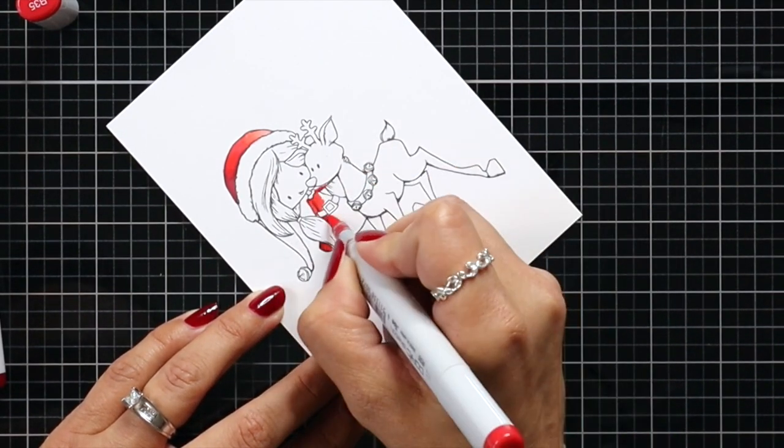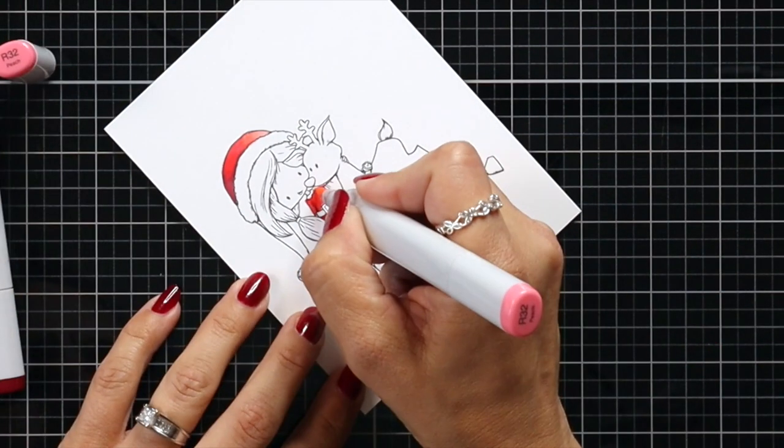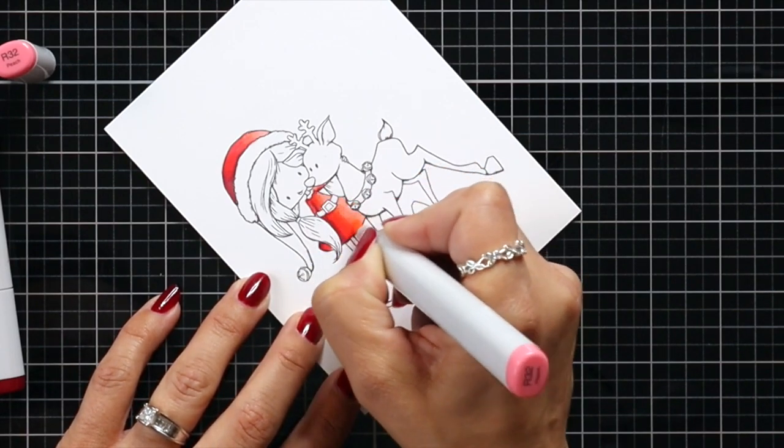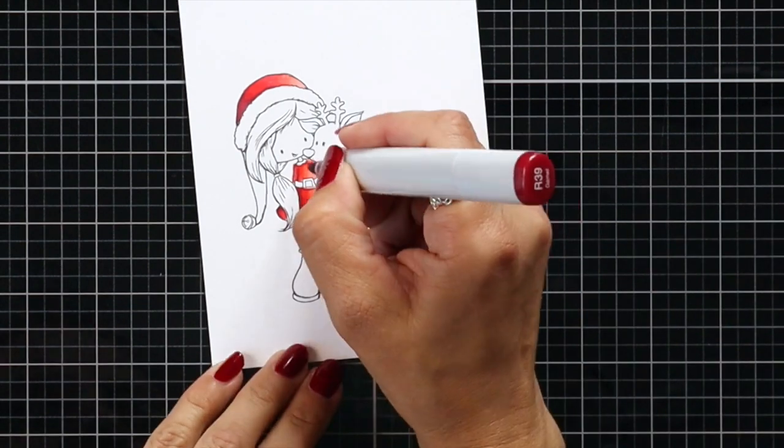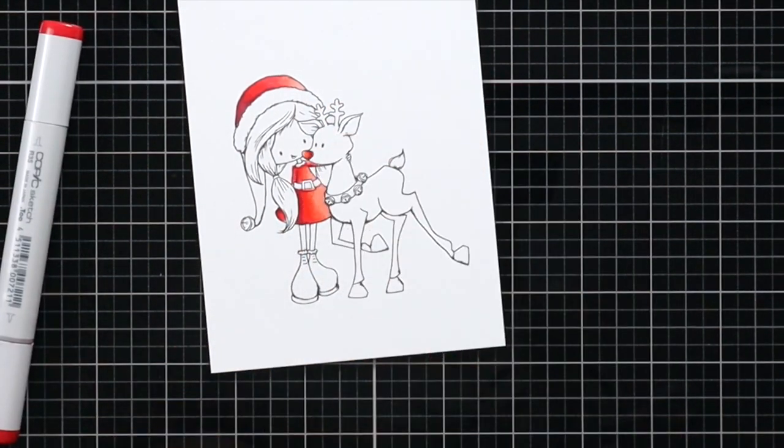I'm starting with my reds because for me reds can be really finicky and will most likely bleed somewhere where I don't want it. Starting with the reds helps me decide if I need to change up my color scheme a little bit. I can also use a colorless blender if something bled over the lines, but I could not find my colorless blender, so I had to work with the color scheme instead.